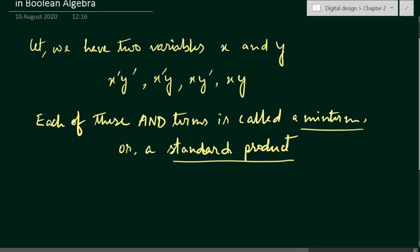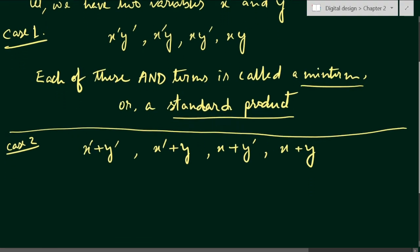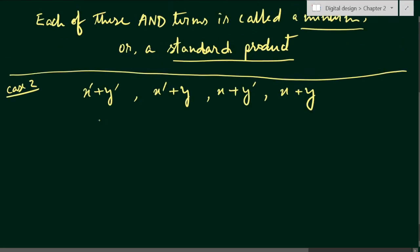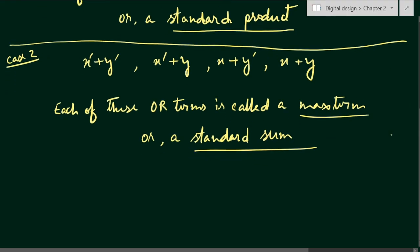Now we have seen the minterms or standard products. Here the input variables are related through the OR gate. We have x bar plus y bar, x bar plus y, x plus y bar, and x plus y — these are four different sum terms. Each of these OR terms is called a maxterm, also known as a standard sum.